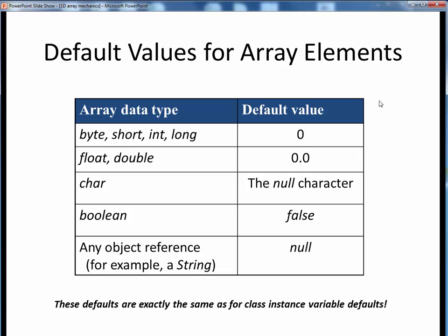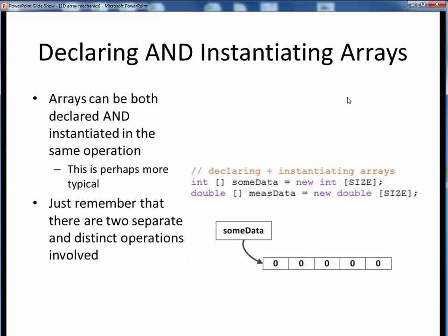This table shows the default values for all array elements upon instantiation. Integer data types are initialized to zero. Floating point data types are initialized to 0.0. Char data types are initialized to the null character. Boolean data types are initialized to false. And all object reference types are initialized to a null value. Does this table look familiar? Well it should, because these default values are exactly the same ones used as defaults for the instance variables of any class.